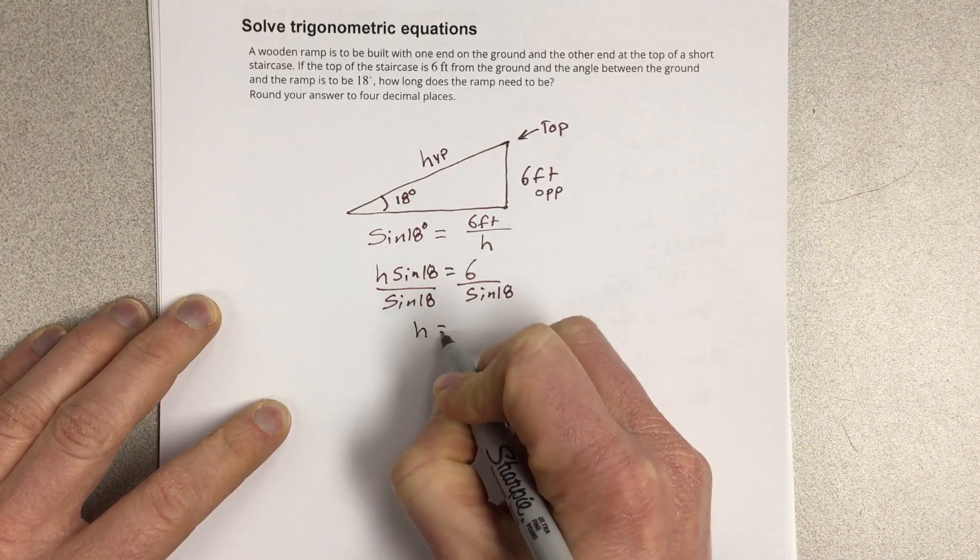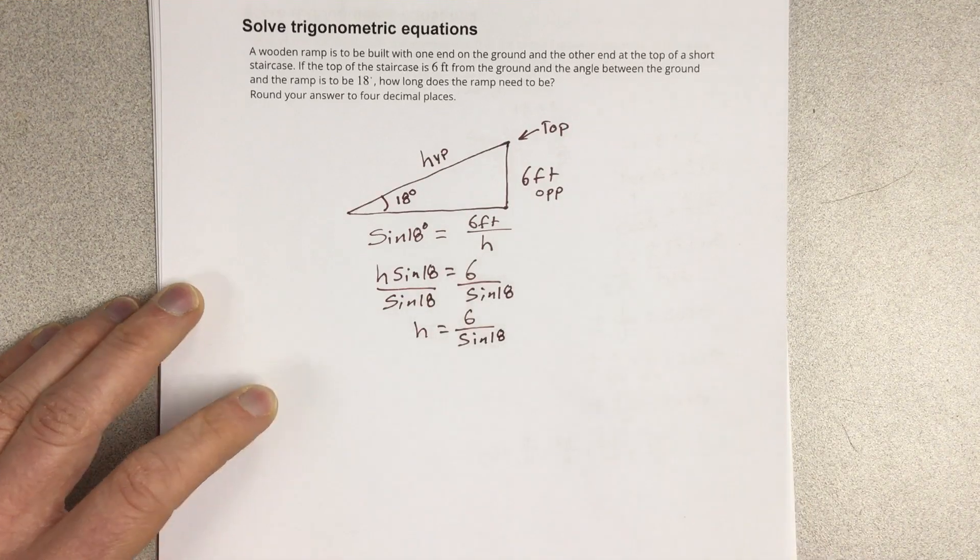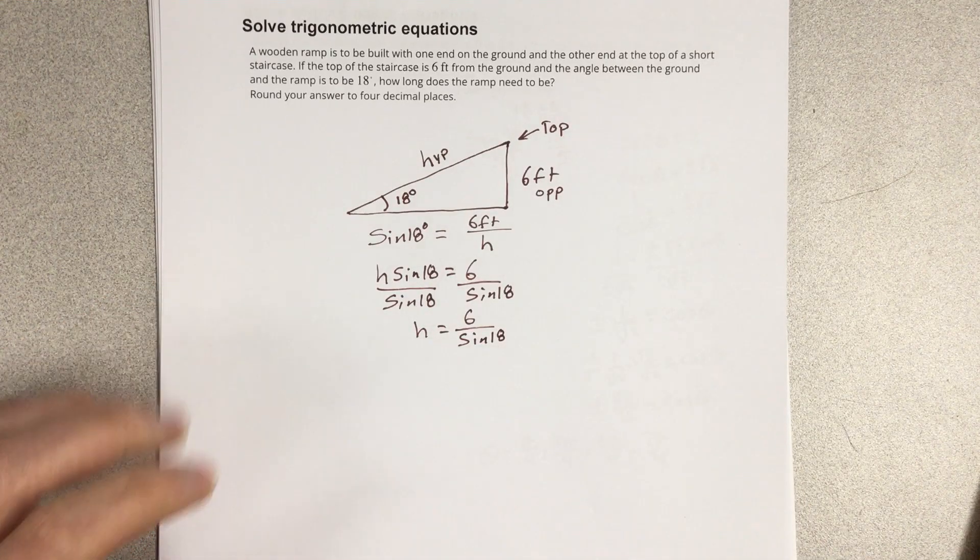So we have h equals six divided by sine 18. If we plug that in the calculator...